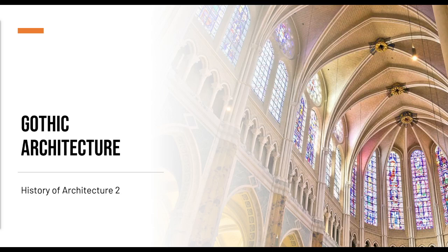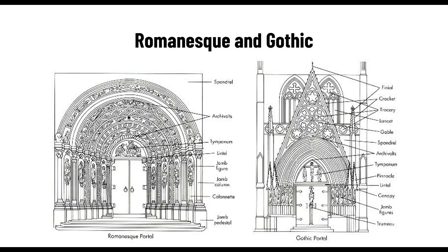Hello, good day, and welcome to your second lesson for History of Architecture 2. For today's topic, we're going to be discussing Gothic architecture. The main difference is that Romanesque is more on linear, geometric, and semicircles, while Gothic architecture is more on pointy.